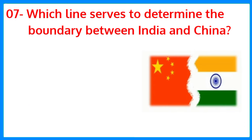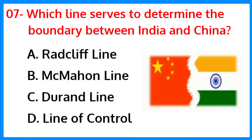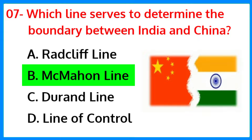Which line serves to determine the boundary between India and China? The correct answer is option B — MacMahon Line.